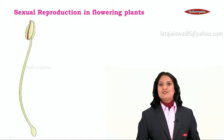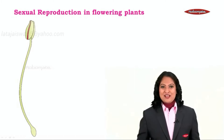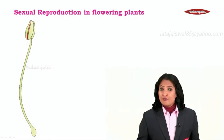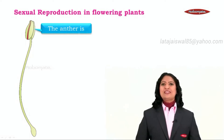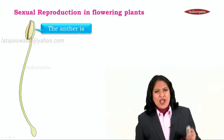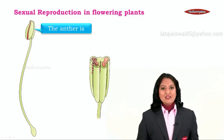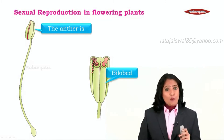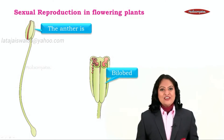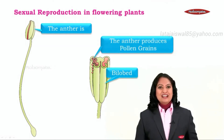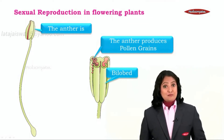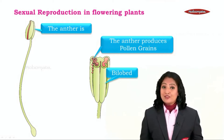Let us learn more about them in detail. The diagram you can see adjacent to me is that of a stamen. The long stalk-like structure is the filament, but most important is right at the top, which is the anther. If you observe the anther very carefully, we see that the anther is bilobed — lobe means a thin ear-like structure. Each anther is bilobed. Moving further, the anther has special cells inside it which produce something called pollen grains.